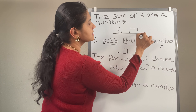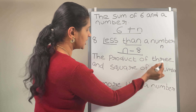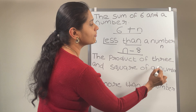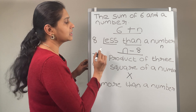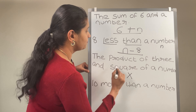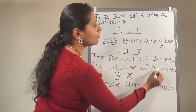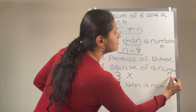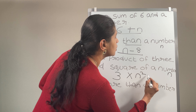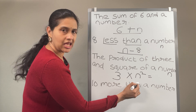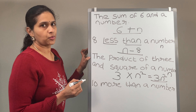Now consider the product of 3 and square of a number. The product means we are going to multiply something. So 3 times n squared — consider this number as variable n. Square of a number means n squared. So 3 times n squared, which means 3n squared, is the solution for this problem.